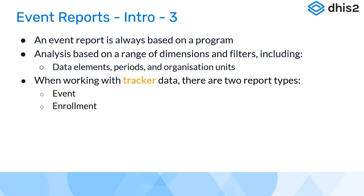The analysis we do is based on a range of dimensions and filters — a combination of data elements, periods, and organization units. You know the three main dimensions in DHIS2: what, when, and where. The 'what' is represented by data elements and attributes, plus period and organization unit. When working with tracker data, we also have the two concepts of events and enrollment, which we will now discuss in more detail.